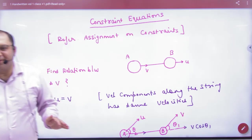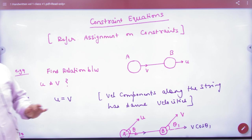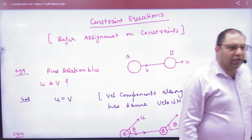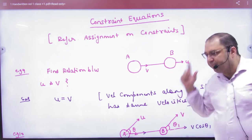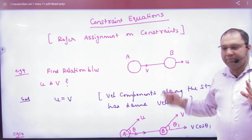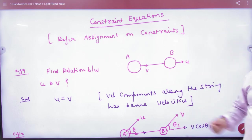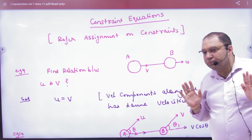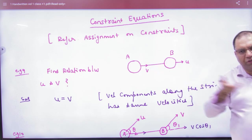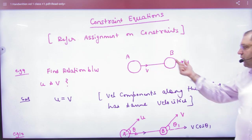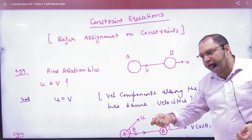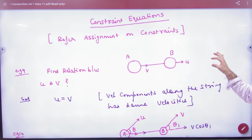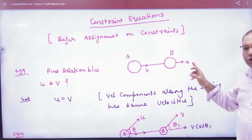Constraint equations. In the constraint equations it is very simple. In this one you have a string, two masses. I gave it u velocity, tell us what will happen. It is very simple. This will straight move because the string will be tight. The whole system will move with velocity, so v is equal to u.